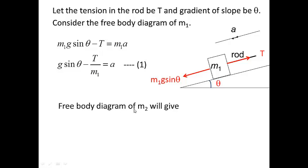Now the free body diagram of M2 will give M2g sin theta plus T equal to M2a, plus because now for M2 the tension is pulling it downwards.